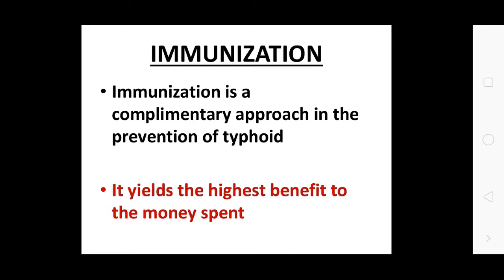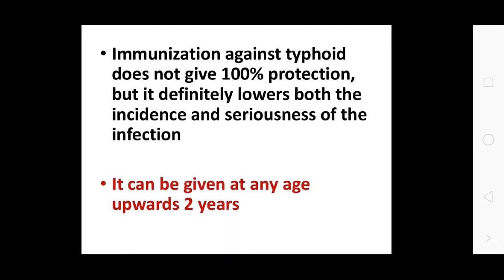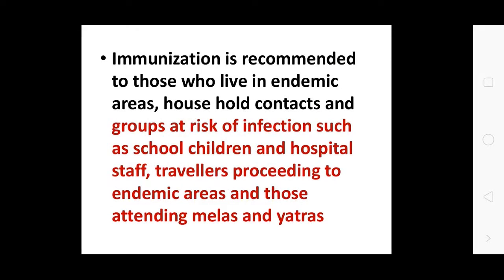Immunization is a complementary approach to prevention of typhoid fever and yields the highest benefit for managed populations. Immunization against typhoid does not give 100% protection but definitely lowers both incidence and seriousness of infection. It can be given at any age from 2 years. It is recommended for those living in endemic areas, household contacts, high-risk groups such as school children, hospital staff, travelers to endemic areas, and those attending melas and yatras.